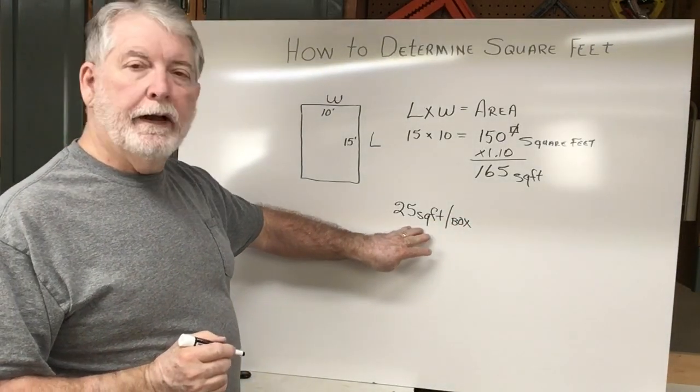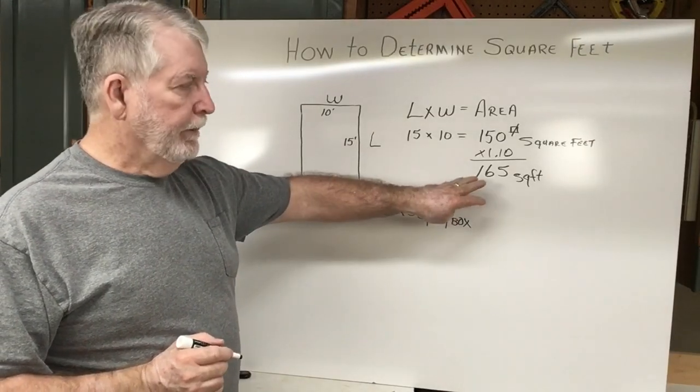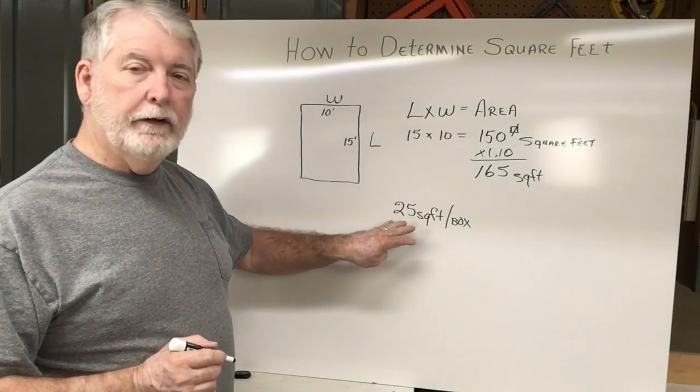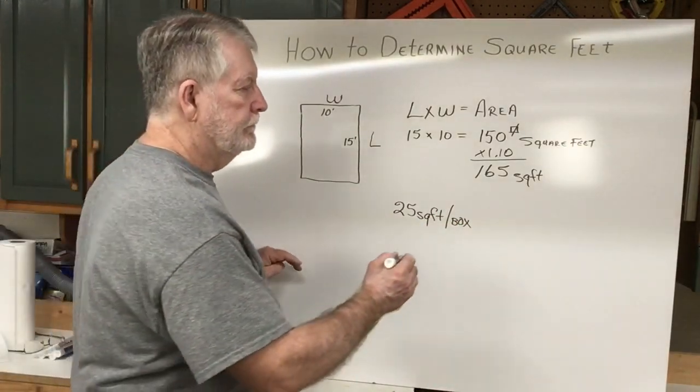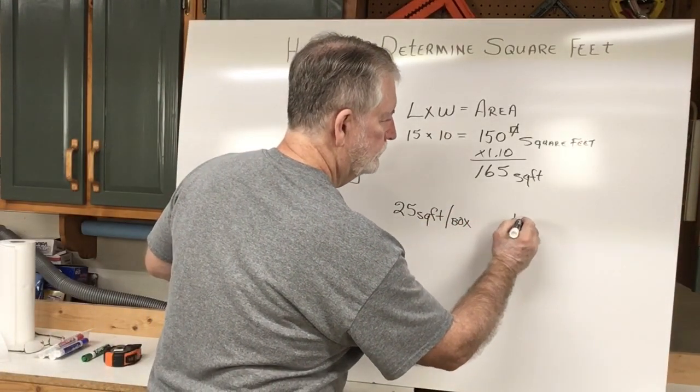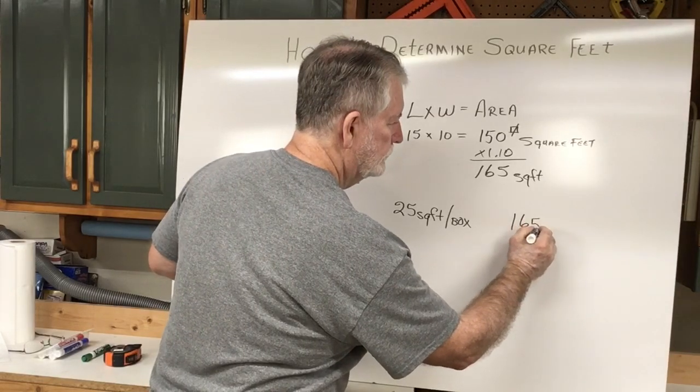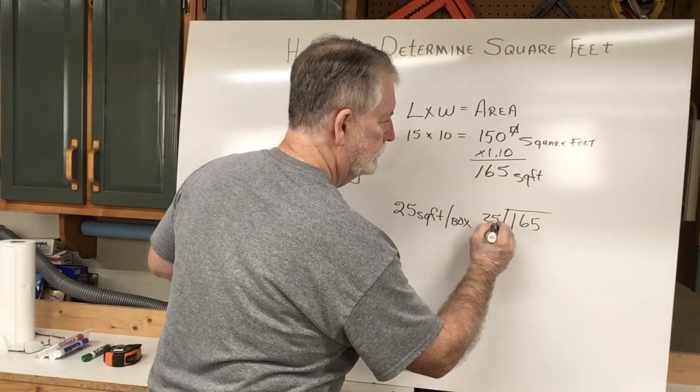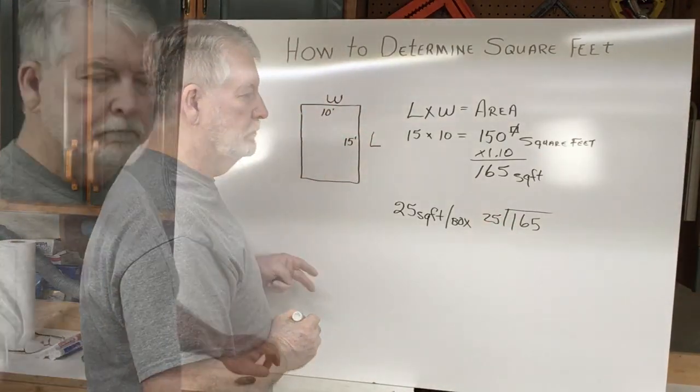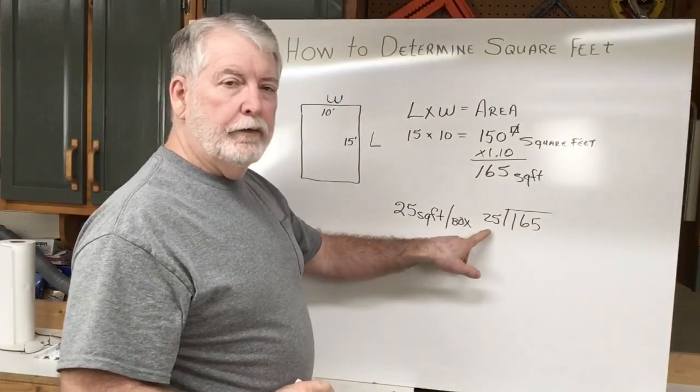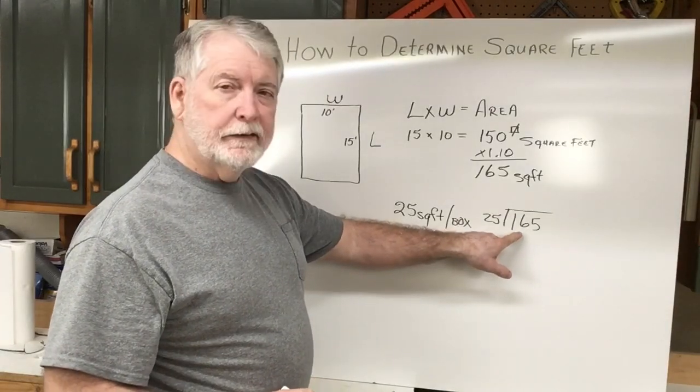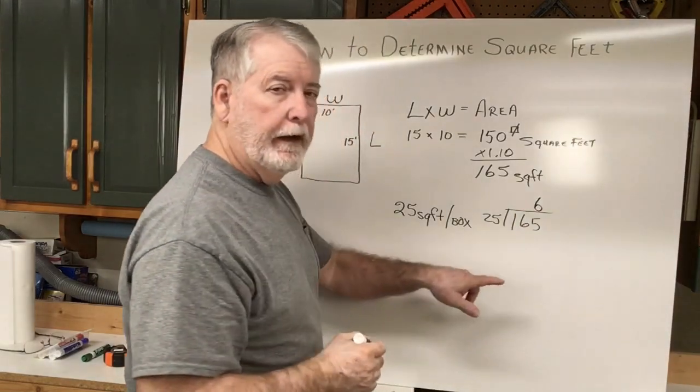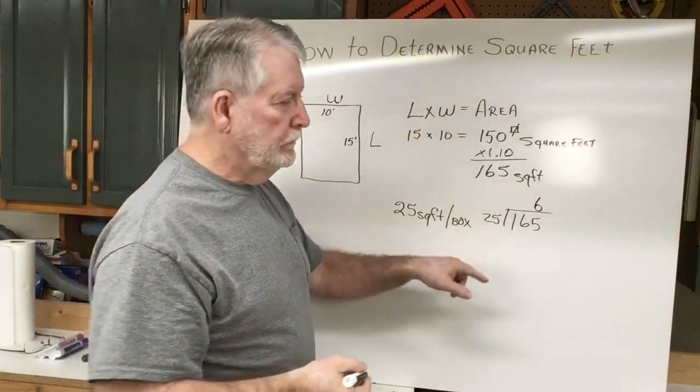So now, how are you going to determine how many boxes you need? All you need to do is take the 165 feet and divide it by the 25. So then, the 25 divided by the 165, that's going to be 6 and some left over.